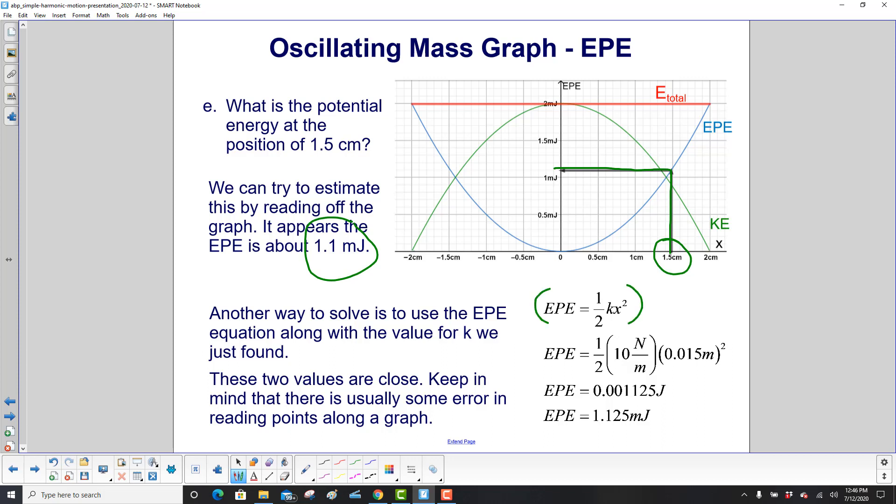But if we want it exact, we use the EPE equation. We found the value of k on the last slide, so input that in, and here's your x, and make sure you use it in meters. Do the calculation, and you get EPE is 1.125 millijoules. The values are close, but keep in mind, there's usually some error in reading points along a graph.